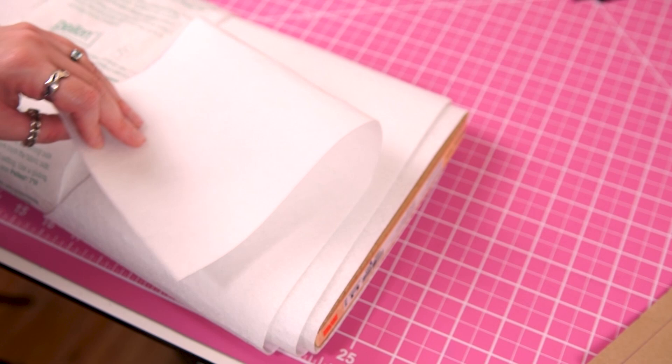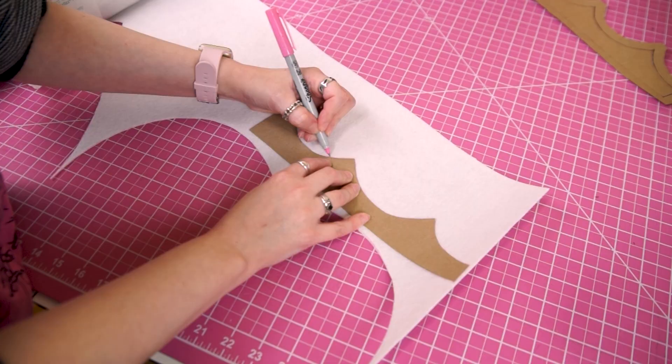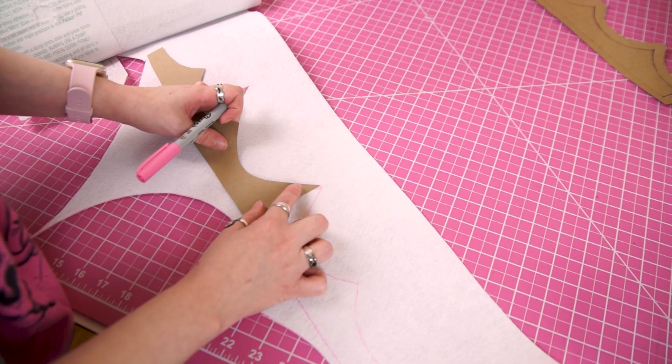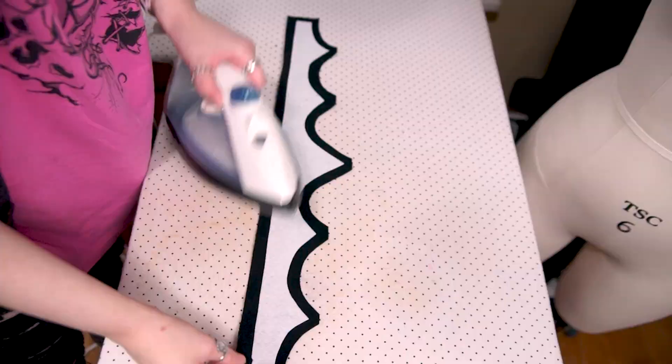Your interfacing is what will give your crown the stability to hold itself up on your head without needing to wire it, so you want the firmest version you can find. We cut out two matching pieces of outer fabric with seam allowance, but we only need one piece of interfacing without seam allowance.